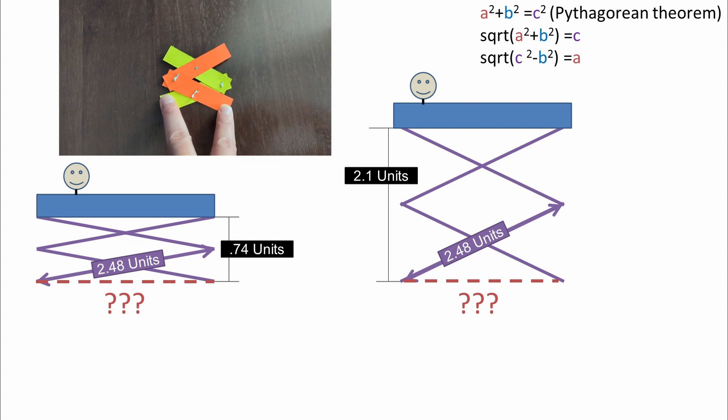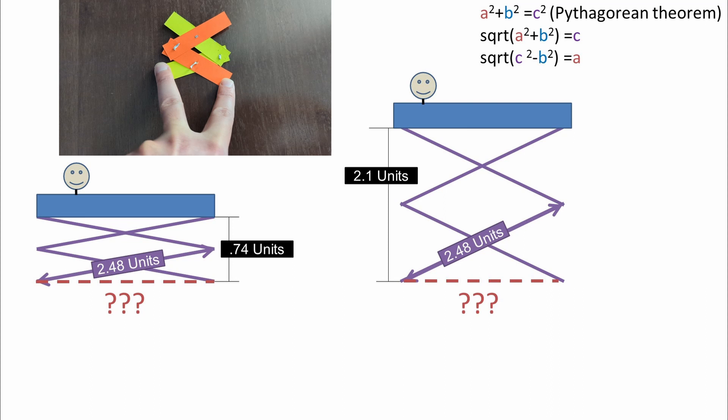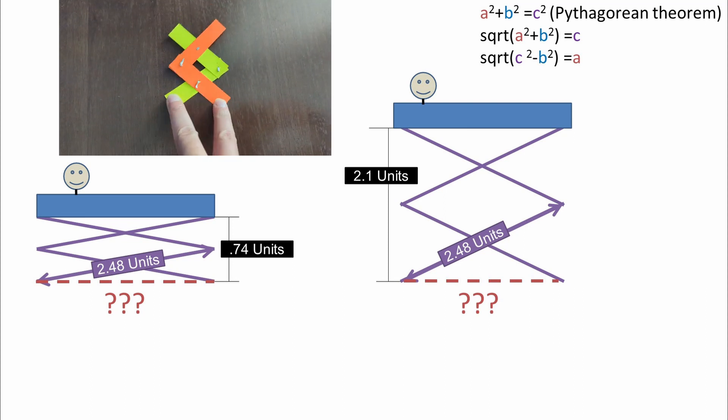So how do we go about solving this one? Hint, here's the Pythagorean Theorem, which is a squared plus b squared equals c squared.